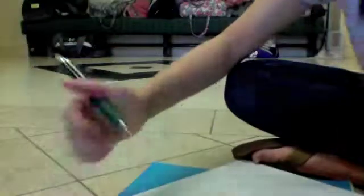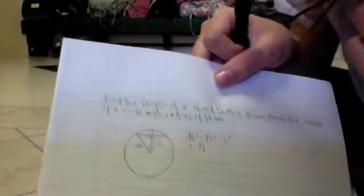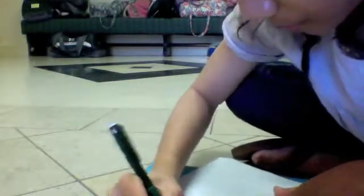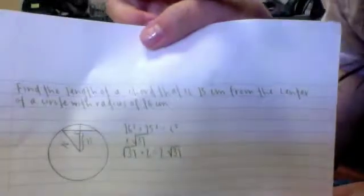So now you know half of the chord. And to find the whole length, you double it. So, 31... I'm sorry, that's the square root of 31. So the square root of 31 times 2 equals 2 square roots of 31. And the unit is centimeters.